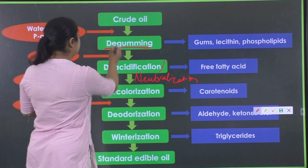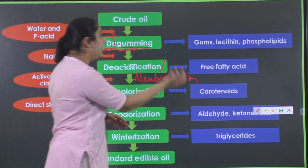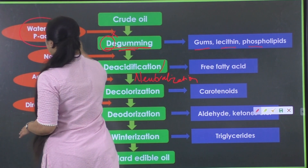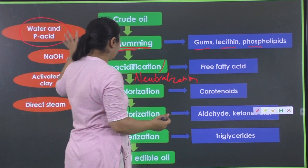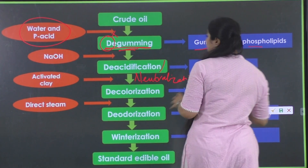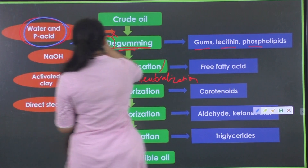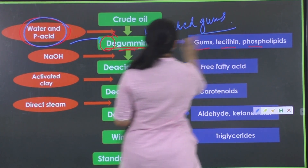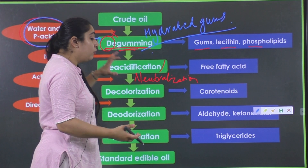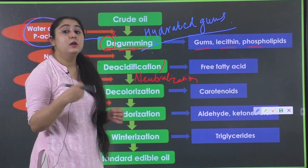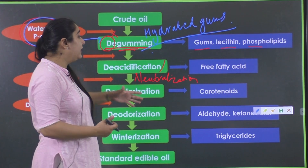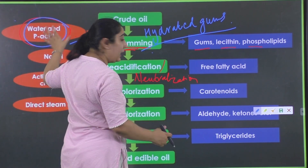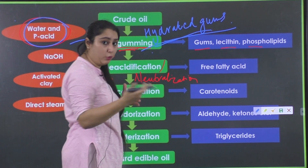De-gumming, as the name tells, involves removal of certain gums. We will be removing gums, lecithin, and phospholipids. They will be removed with the help of water and phosphoric acid. With the addition of water and phosphoric acid, these gums will be converted into hydrated forms, and these hydrated gums can then be removed from the oil.